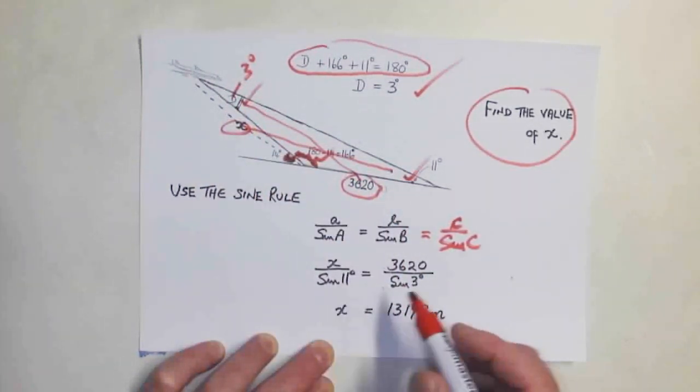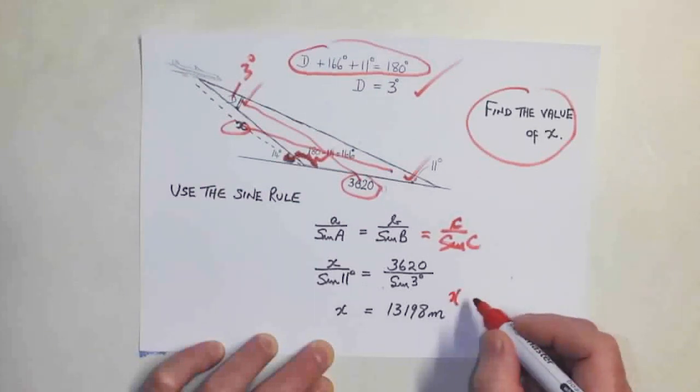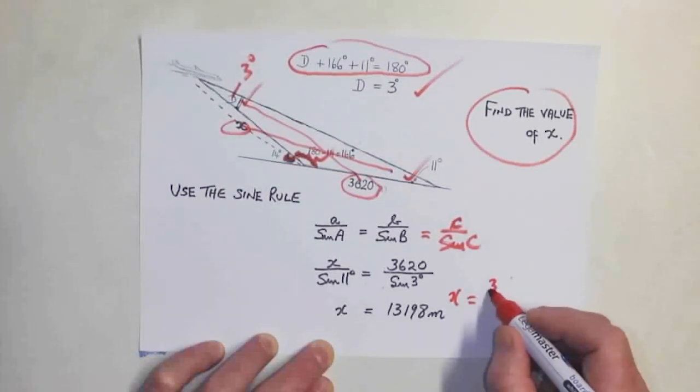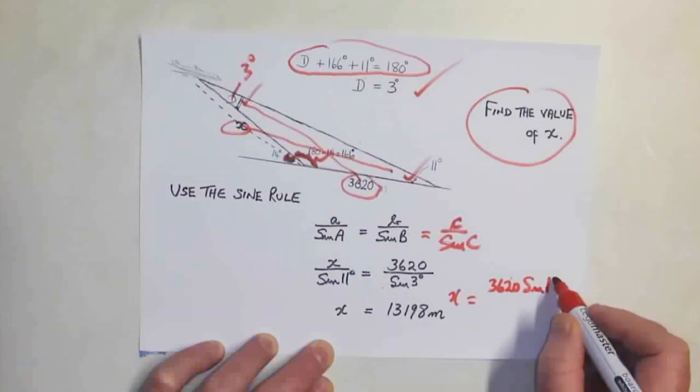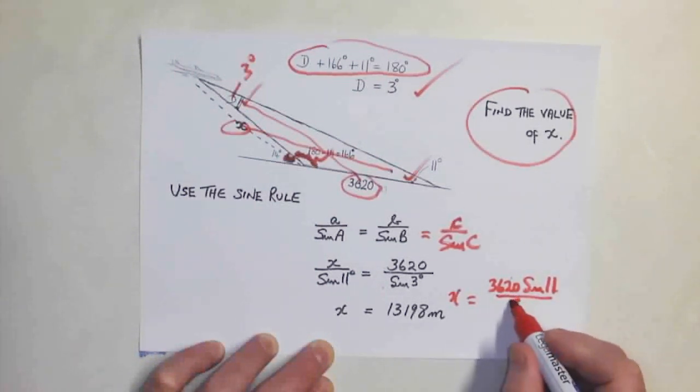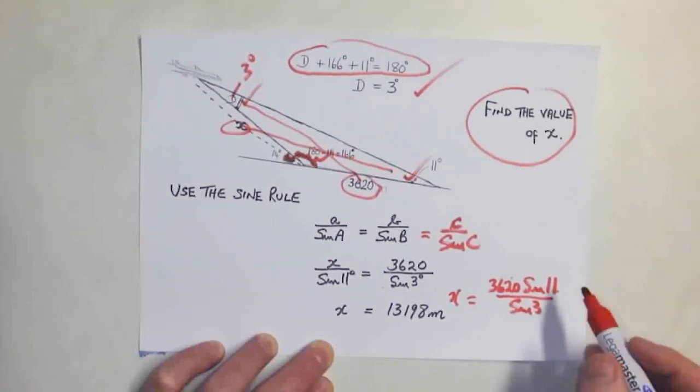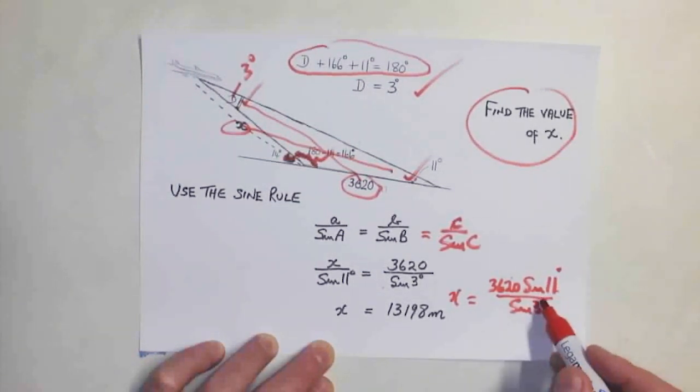If you look at that, x is simply 3620 times the sine of 11 degrees, all over the sine of 3 degrees. If you tap that into your calculator, make sure you're in degrees mode, and you'll come up with the answer.